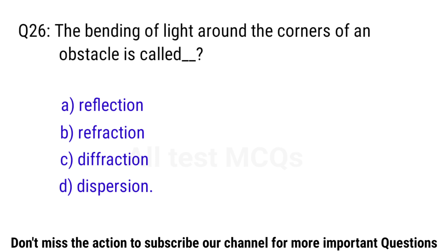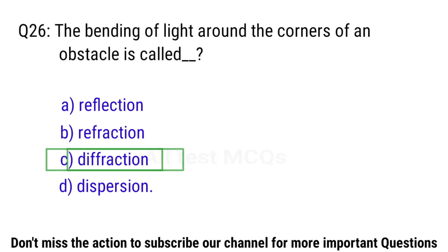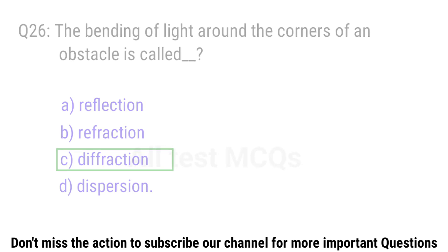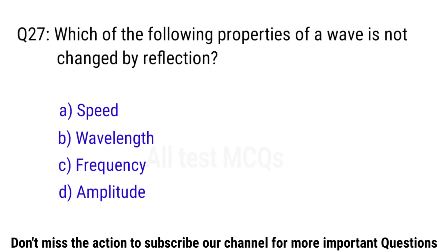Q26. The bending of light around the corners of an obstacle is called? The right answer is option C. Diffraction. Q27. Which of the following properties of a wave is not changed by reflection? The right answer is option C. Frequency.